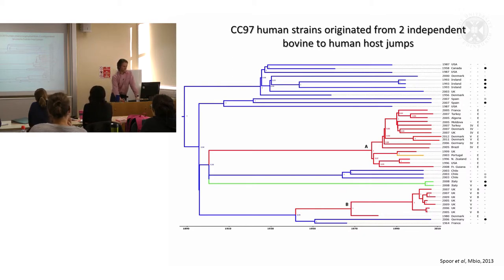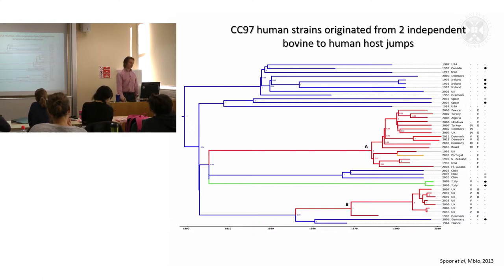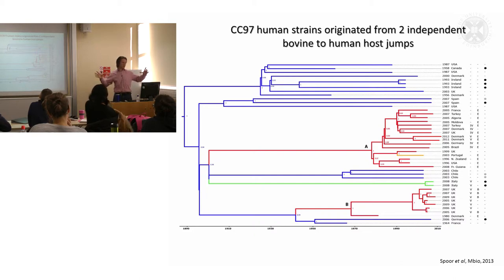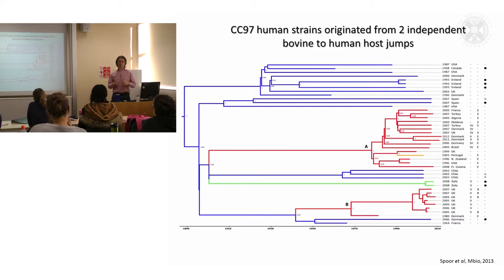In red are the human-associated strains, and in green we had two pig strains included in the analysis as well. This yellow one here is a goat isolate. Straight away, you can see there's a large diversity of livestock strains — much greater diversity of bovine strains than of human strains — and all of the human strains cluster together into two separate subclades within the phylogenetic tree.